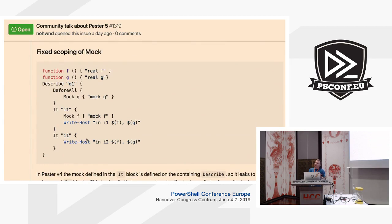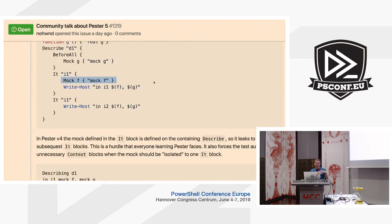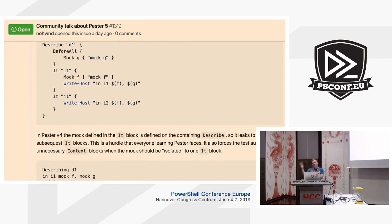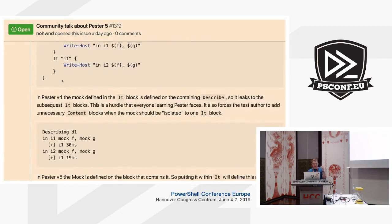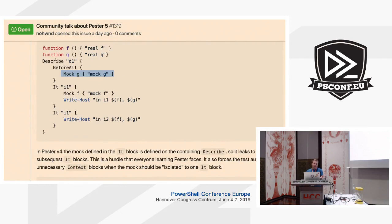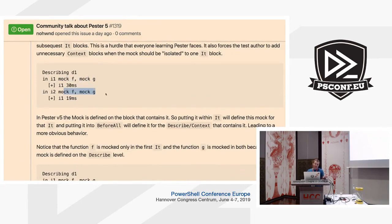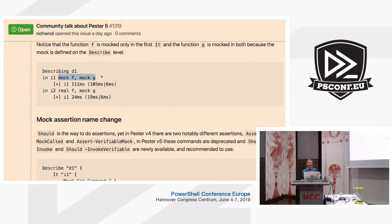Also, mocks will be scoped based on where you put them. People are very confused about this currently. If you define a mock inside an It block in version 4, it leaks into the whole Describe or context block containing it — so a function called in a totally different test still points to the mock, and to isolate it you have to add another level of context. In version 5 mocks are scoped to where they're placed: a mock in Describe is resolvable in the whole Describe; a mock in It is scoped to just that It block.